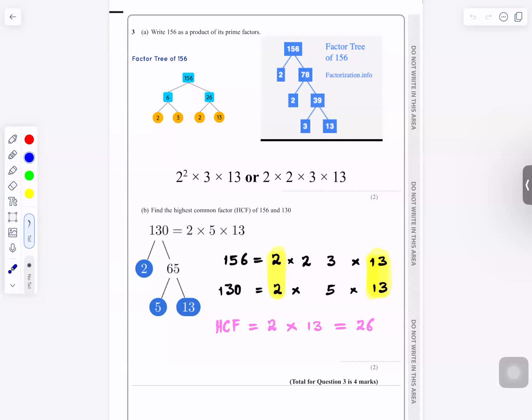Number 3: Write 156 as the product of its prime factors. You can use 6 times 26, but most students will use this one.